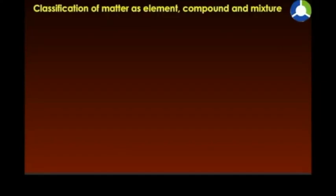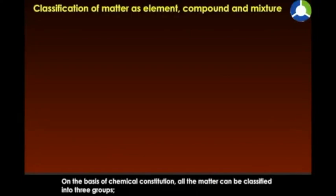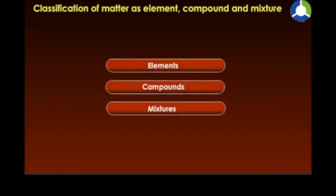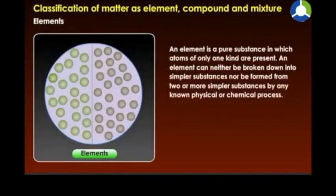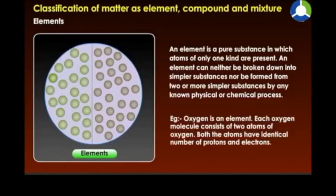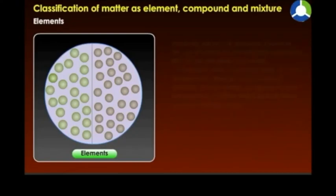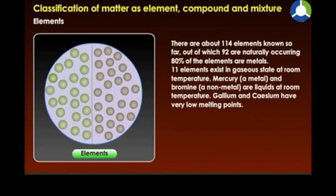Classification of matter as element, compound, and mixture: on the basis of chemical constitution, all matter can be classified into three groups — elements, compounds, and mixtures. An element is a pure substance in which atoms of only one kind are present. An element can neither be broken down into simpler substances nor be formed from simpler substances by any known physical or chemical process. For example, oxygen is an element; each oxygen molecule consists of two atoms of oxygen with identical numbers of protons and electrons. There are about 114 elements known so far, of which 92 are naturally occurring.